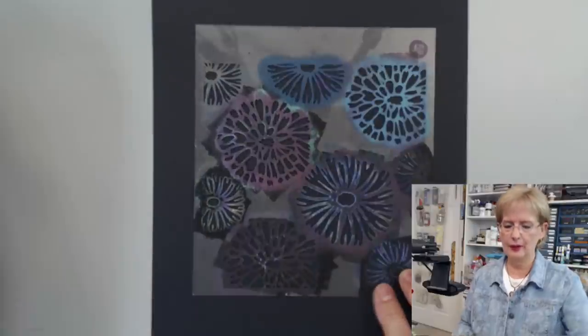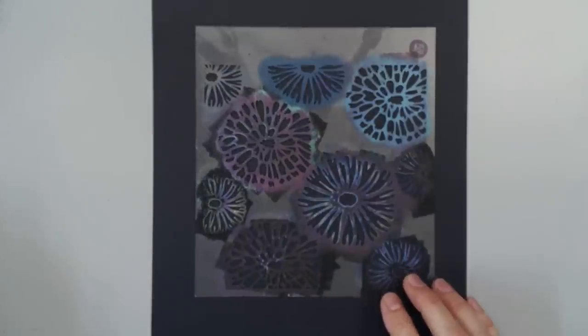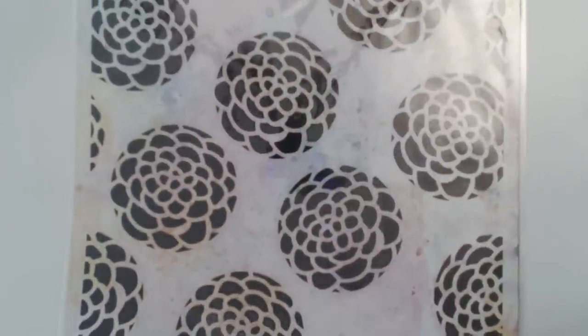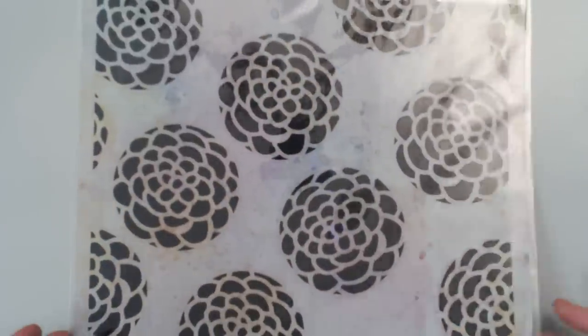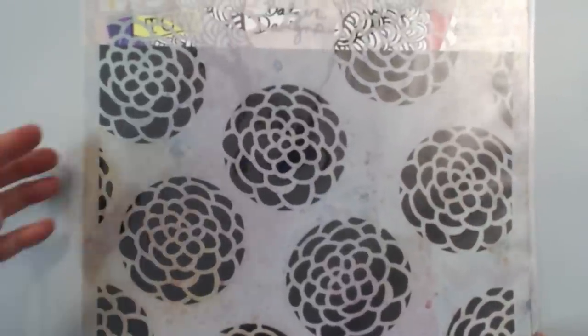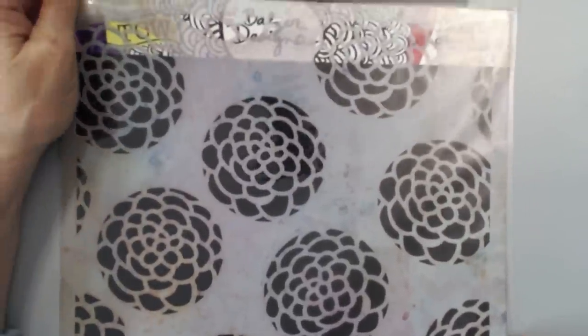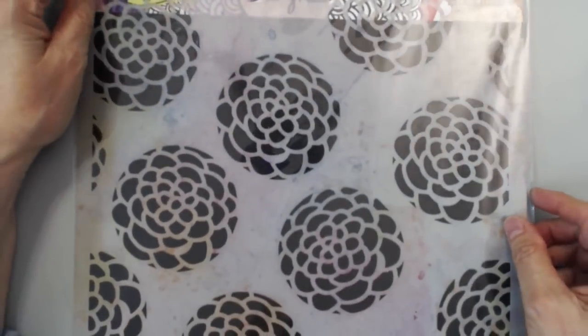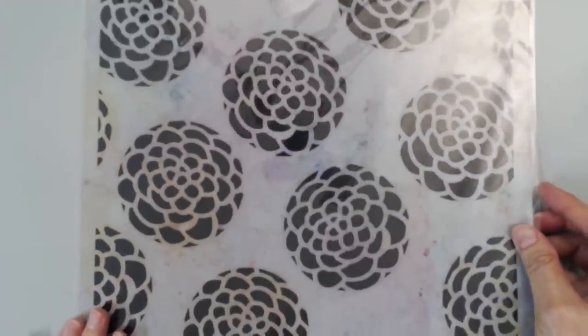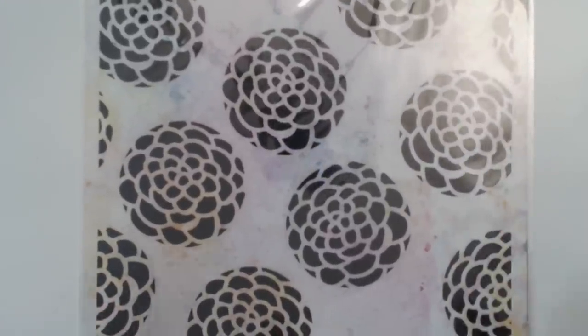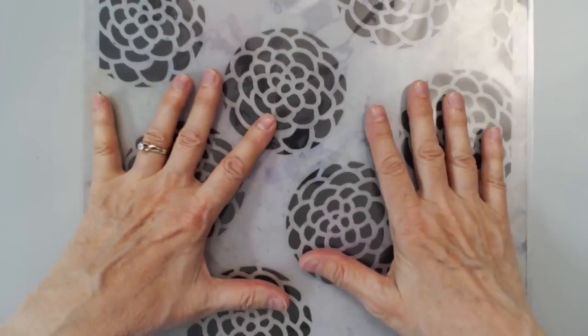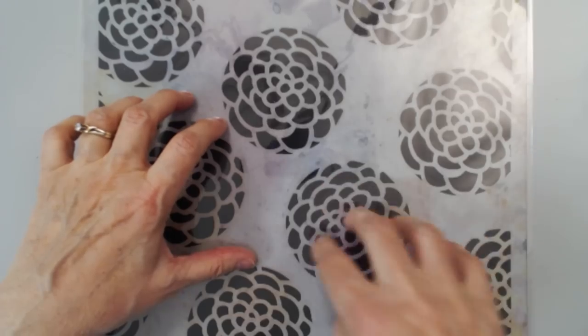Back to the stencils. They also are available in size 12 inches by 12 inches. Let's see if we can see right up here. It says 12 by 12. And those are nice if you're working on large format paper like scrapbook paper or mixed media paper that comes in a bigger sheet. But again, this is a piece of plastic that has had the shapes cut out.